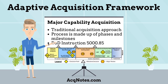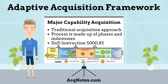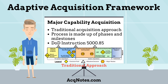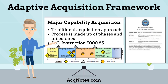The third Adaptive Acquisition Pathway is Major Capability Acquisition. The Major Capability Acquisition process is for those programs where the traditional acquisition approach has been determined to be the most appropriate. The process is made up of phases and milestones and is detailed in DOD Instruction 5000.85, Major Capability Acquisition.